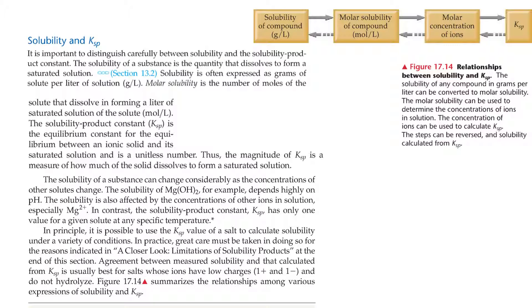Solubility and K-sub-sp. It's important to distinguish carefully between solubility and the solubility product constant. The solubility of a substance is the quantity that dissolves to form a saturated solution, often expressed in grams of solute per liter of solution. Molar solubility is the number of moles of solute that dissolve per liter of saturated solution. The solubility product constant is the equilibrium constant for the equilibrium between an ionic solid and its saturated solution, and is a unitless number. The magnitude of K-sub-sp is a measure of how much of the solid dissolves.